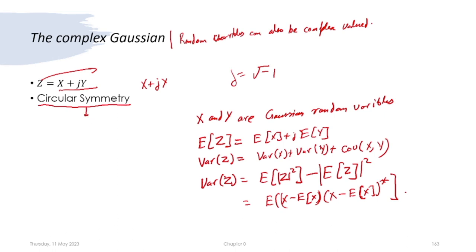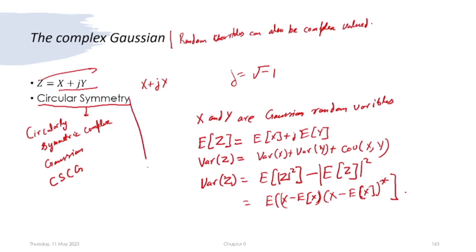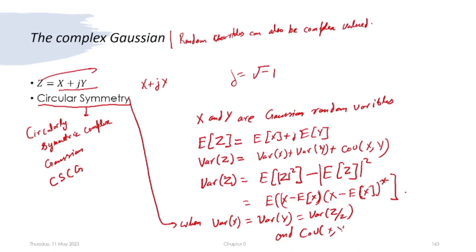The most commonly considered complex Gaussian from a communications perspective is the circularly symmetric complex Gaussian, abbreviated CSCG. Circular symmetry means Var(x) = Var(y) = Var(z)/2 and the covariance of x and y is 0.